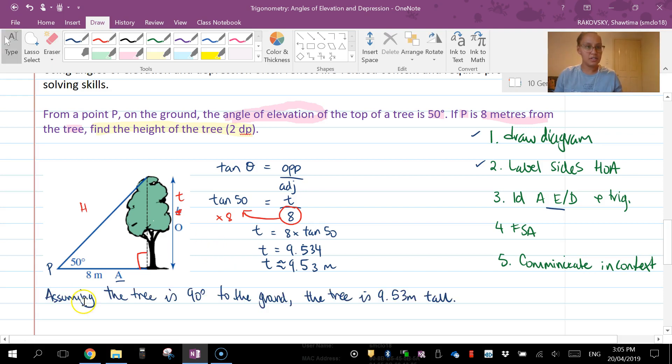There it is: assuming the tree is 90 degrees to the ground, the tree is 9.53 meters tall.